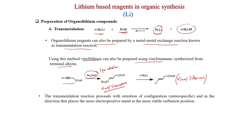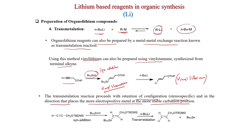Transmetallation proceeds with retention of configuration and is stereospecific; the more electropositive metal occupies the more stable carbanion position. Similarly, a terminal alkyne bearing an O-TBDS group undergoes syn-addition of tributyltin hydride to give the vinyl stannane, and then n-BuLi transmetallation gives the corresponding vinyl lithium.